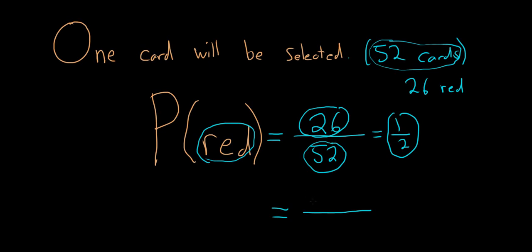So there is one way to select the color red. You select the color red. And there are two choices for the colors, red or black. So 1 over 2. So two different ways to think about the same problem.